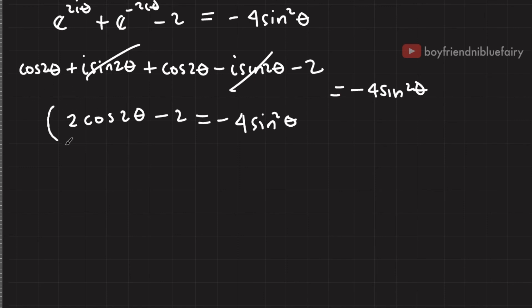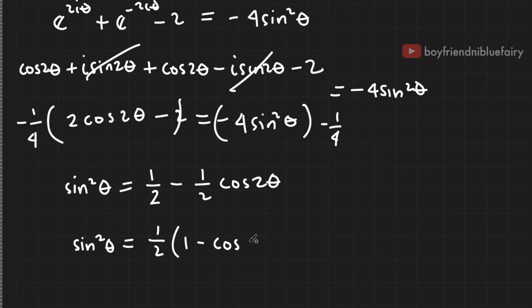I'll multiply both sides of the equation by negative one fourth to get rid of negative four here. So I'll end up with sine squared theta equals one half minus one half cosine 2 theta. Factoring out one half, I'll have one minus cosine 2 theta.